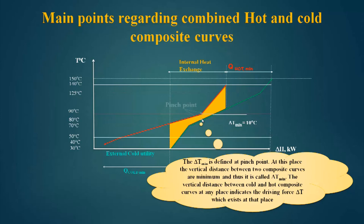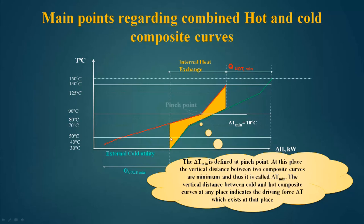At the pinch point, the driving force for heat exchange is minimum. Heat exchangers near the pinch point require very large area because delta-t-minimum is smallest there, whereas away from the pinch point the driving force is larger and the heat exchanger area is smaller. So the size of heat exchangers near the pinch point will be large, and decreases as we move away.